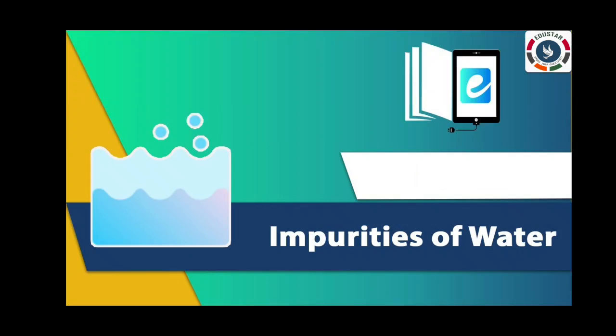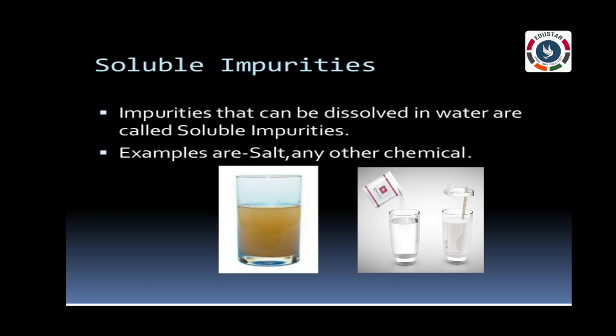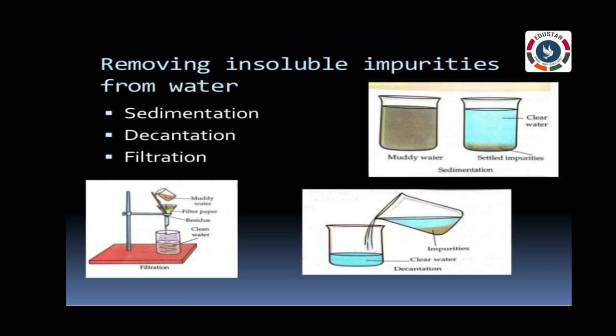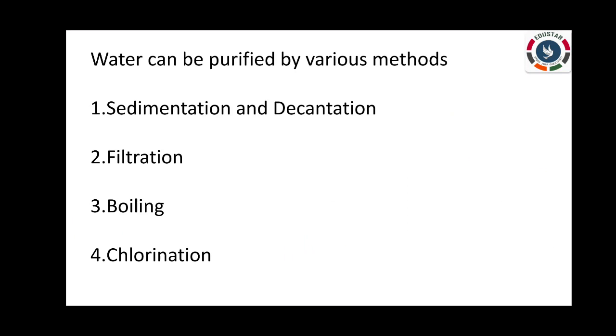Soluble impurities are impurities like salt that dissolve in water and cannot be seen. Insoluble impurities are impurities that can be seen as they do not dissolve in water. For example, pebbles. The impurities present in water can make us fall sick. Water can be purified by various methods.